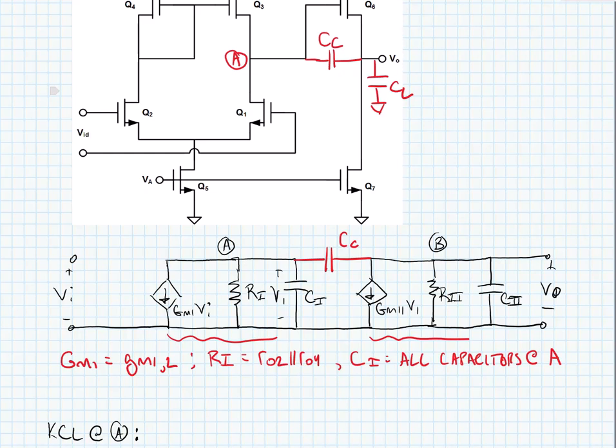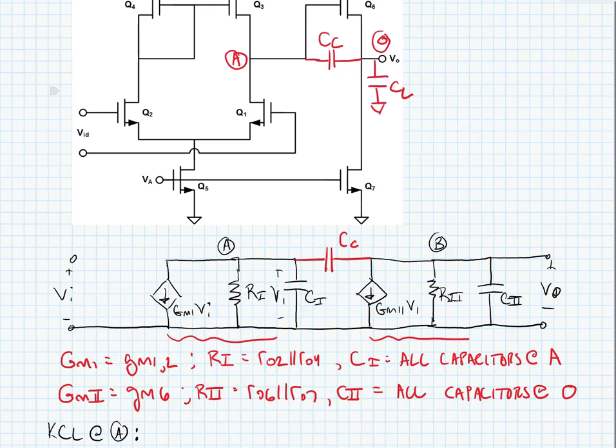We can similarly find the parameters for the second stage. Here, I've labeled the output node, node O. Our big GM2 is equal to GM6. Our R2 is equal to RO6 in parallel with RO7, and our C2 is all of the capacitors at node O, including the load capacitance.